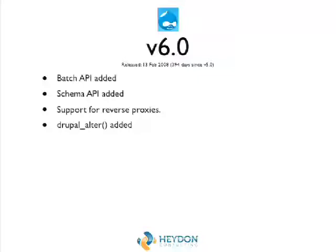In Drupal 6 we got hook_drupal_alter — it created a single API for adding hook alters anywhere in the system. One line in your code and all of a sudden you had a hook alter, so people could start dealing with what you were doing.